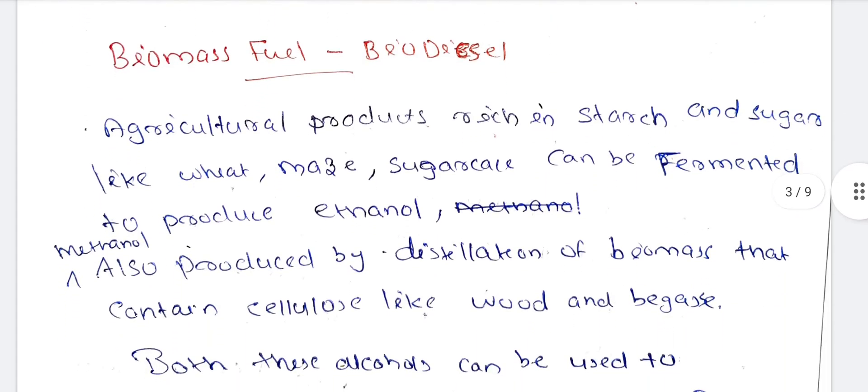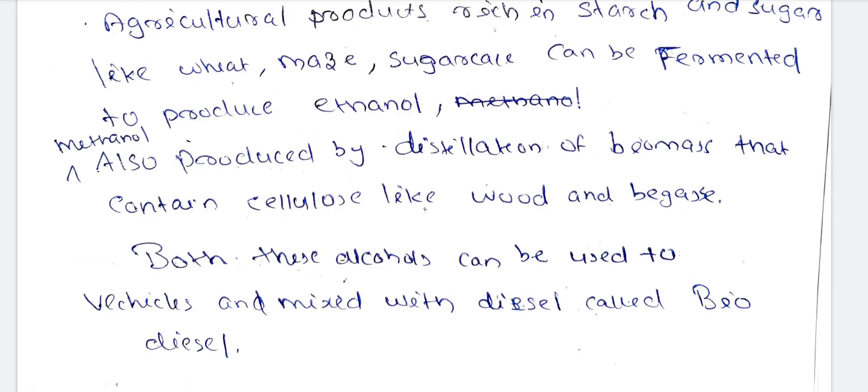We are referring to biomass fuel. Biomass fuel is called biodiesel. Agricultural products rich in starch and sugar like wheat, maize, and sugar cane can be fermented to produce ethanol. Biomass is also produced by the distillation of biomass that contains cellulose like wood and bagasse. We extract ethanol and mix it with diesel, and that's why we have biodiesel.